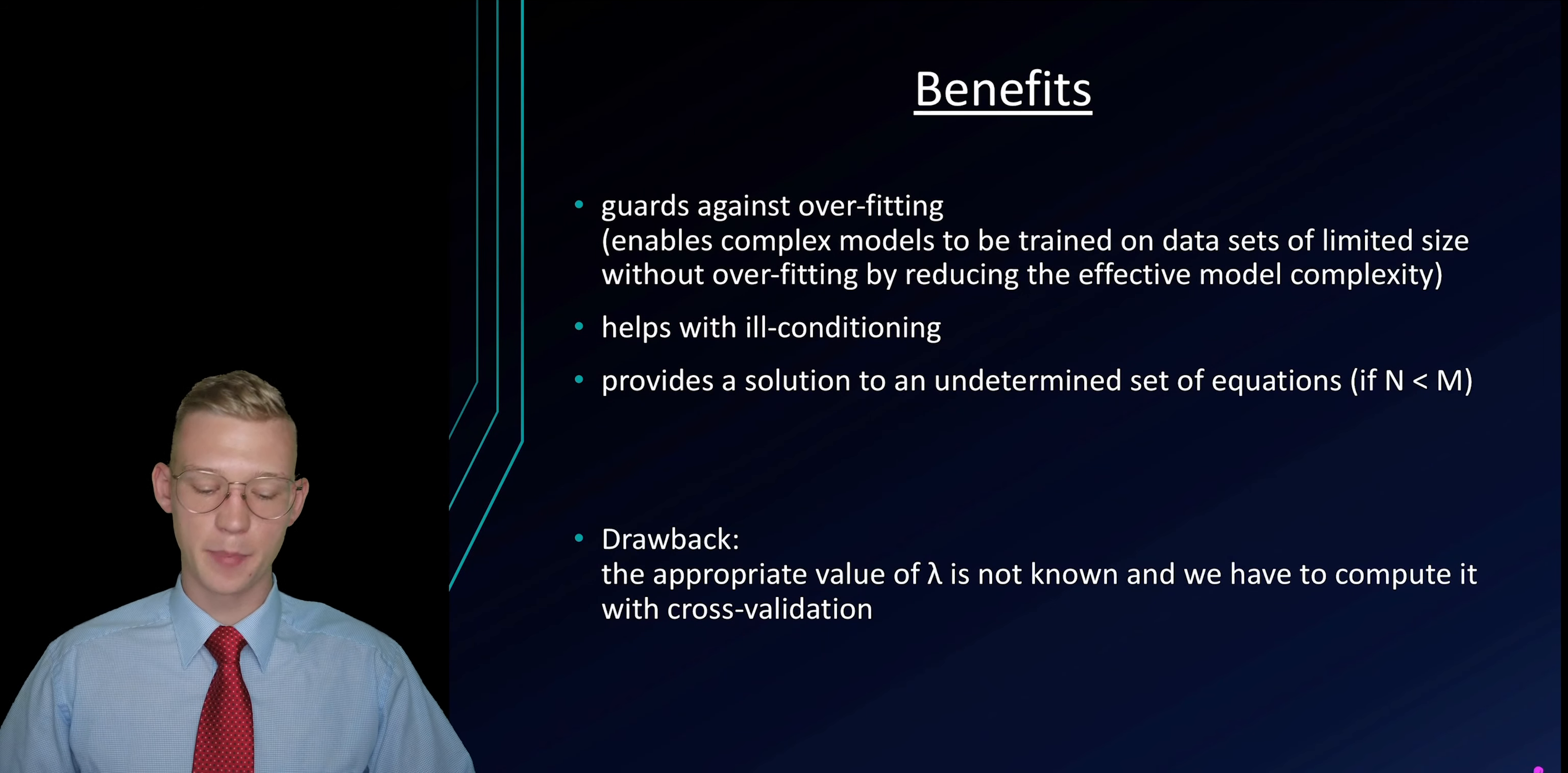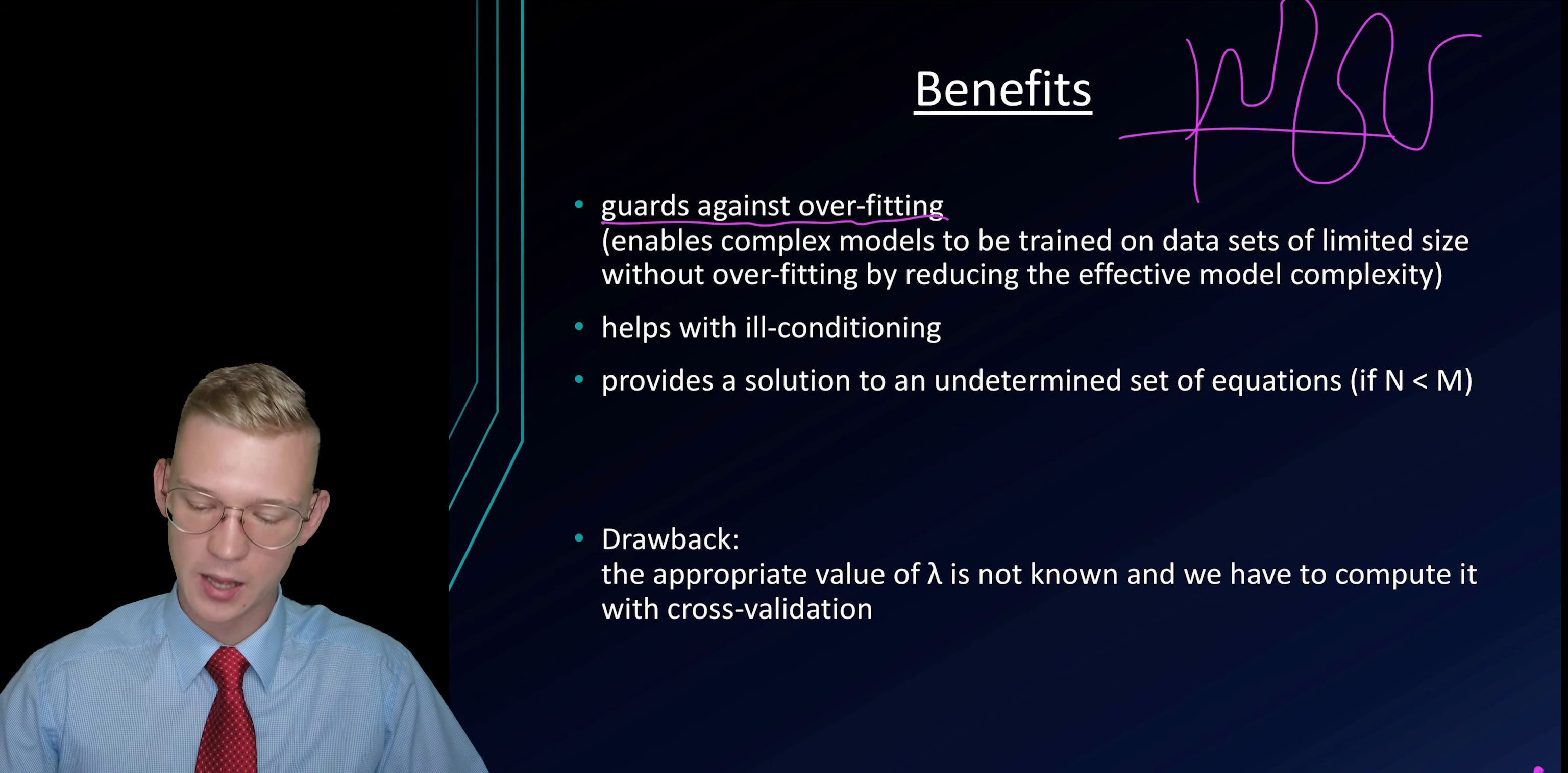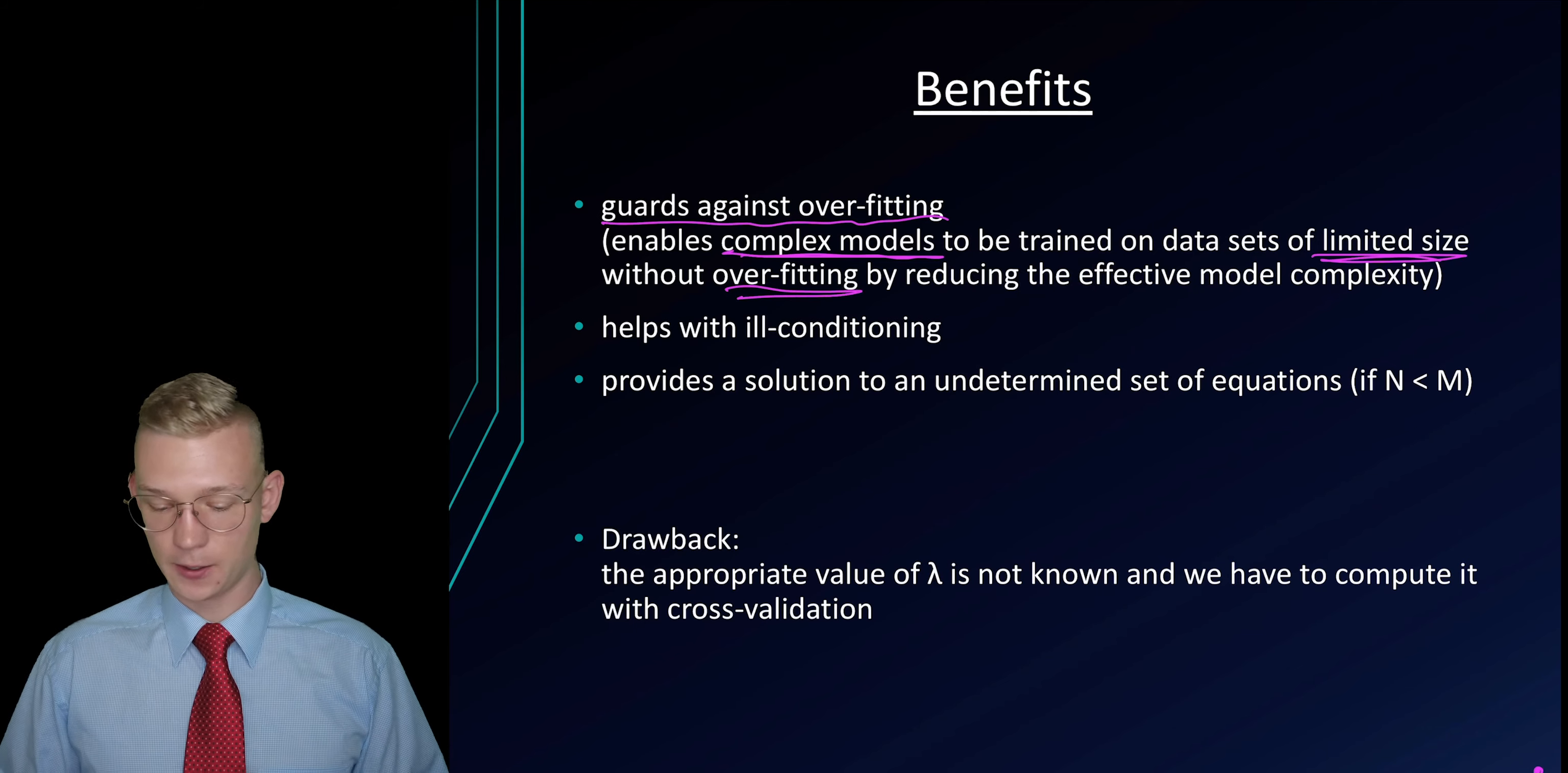What are the benefits? First is guarding against overfitting. If we have an overfitted function in regression, our parameters w are very large. If we have an oscillation that looks like this, the parameters of that function, the w's, have to be very large. We push them towards zero with our lambda. Even if we have complex models, we can train them on datasets that are limited and avoid overfitting.